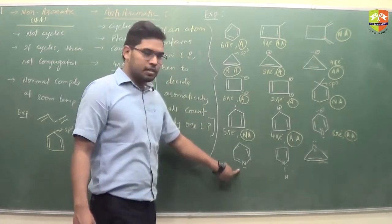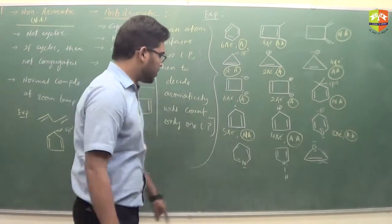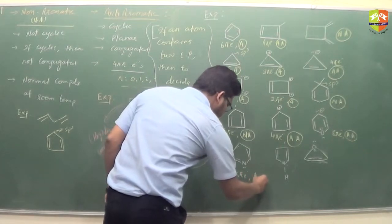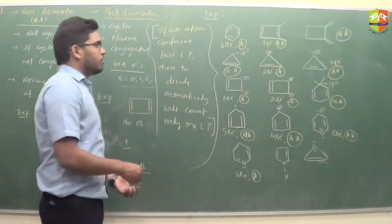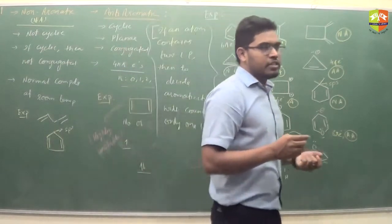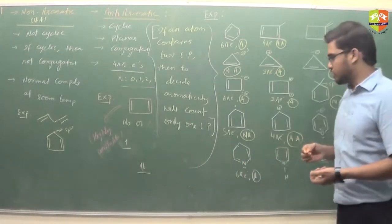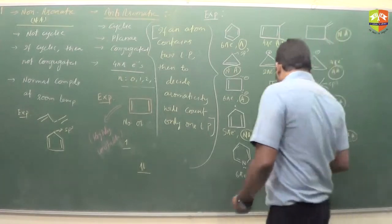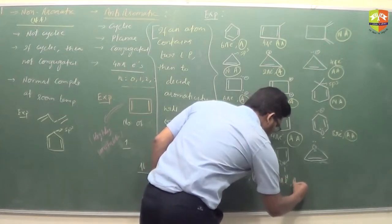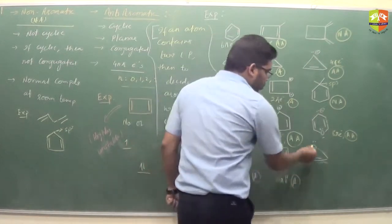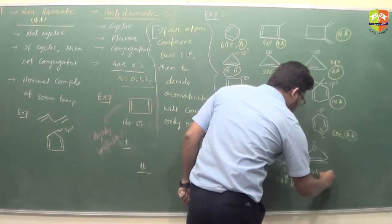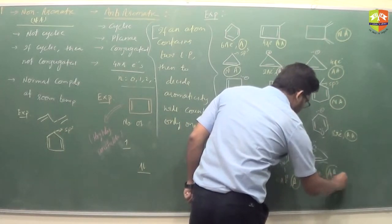In pyridine, the lone pair on nitrogen is not involved in resonance. We calculate 6 pi electrons and hence it is aromatic. When we count the number of pi electrons, we always count the pi electrons or lone pairs which are involved in resonance. Here one lone pair is involved in resonance, giving 6 pi electrons — aromatic. Out of 2 lone pairs, only 1 is involved: 2 plus 2 gives 4 pi electrons, hence anti-aromatic.